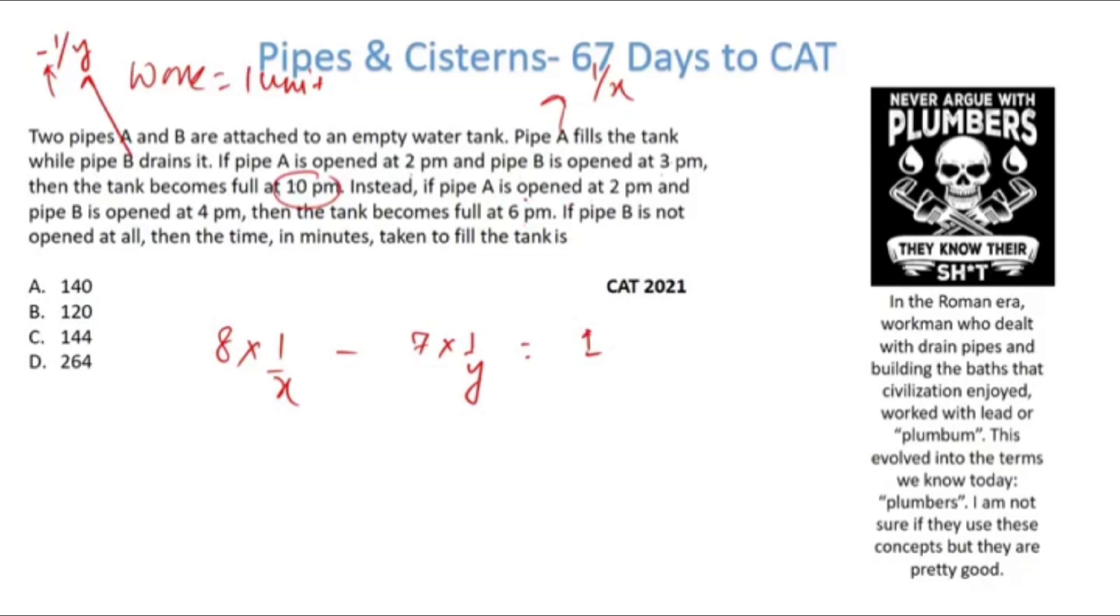Similarly, if pipe A is opened at 2 and pipe B is opened at 4, the tank becomes full at 6pm. So 4 hours here, 4 times 1/x, and 2 hours, 2 times 1/y. That is again equal to 1. Now if pipe B is not opened at all, then the time taken to fill the tank is - basically I want to find out what is x.